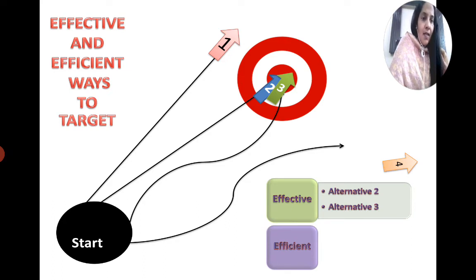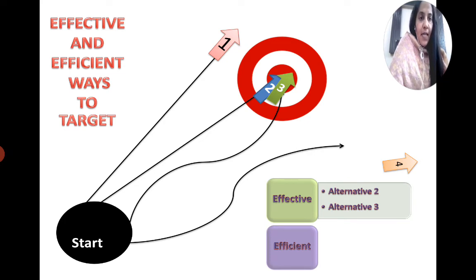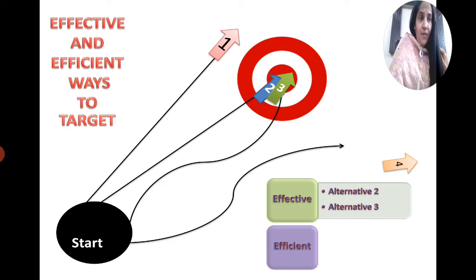Both alternatives two and three are effective for us. Now coming to efficiency: which alternative is efficient? The second alternative takes the right direction straight from start to target. The third alternative also hits the target, but it diverts along the way — which can be in terms of money, wastage of different types of resources, or wastage of time. So the third can be termed as effective only, whereas the second alternative is termed as efficient.